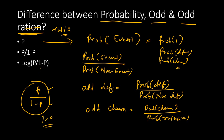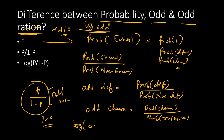The last one is the odd ratio. Odd ratio is just a transformation of odd. And the log odds — what is log odds? The log odds is nothing but the logarithm of odd. The logarithm of the odd ratio is known as the log odds.